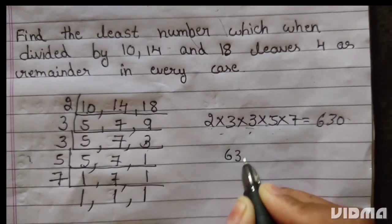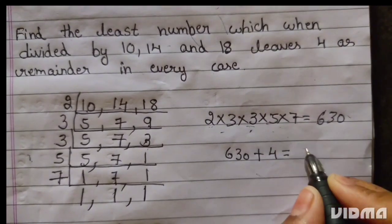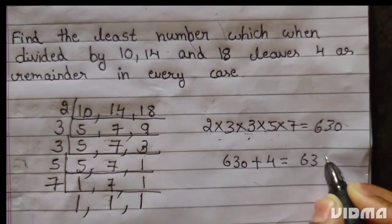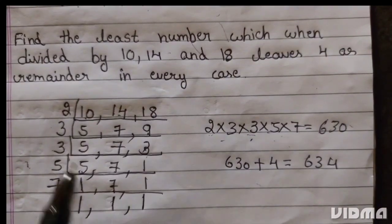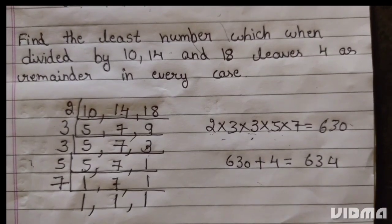630 plus 4 equals 634. The LCM of 10, 14 and 18 is 634.